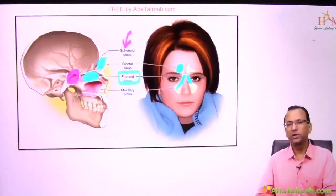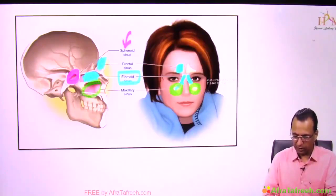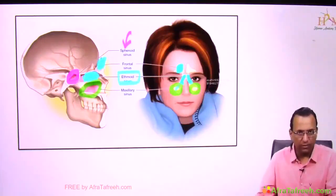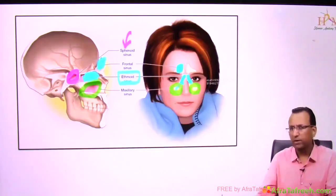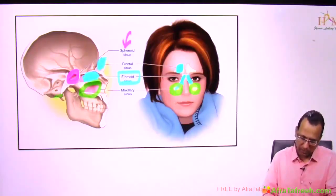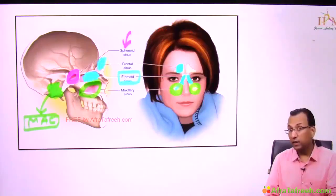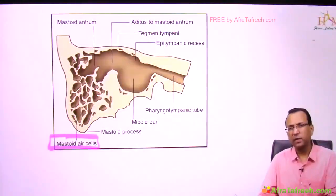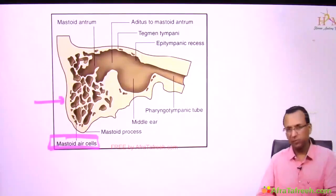The largest sinus is the maxillary sinus. Also important to remember: the temporal bone is a pneumatic bone — it has mastoid air cells.